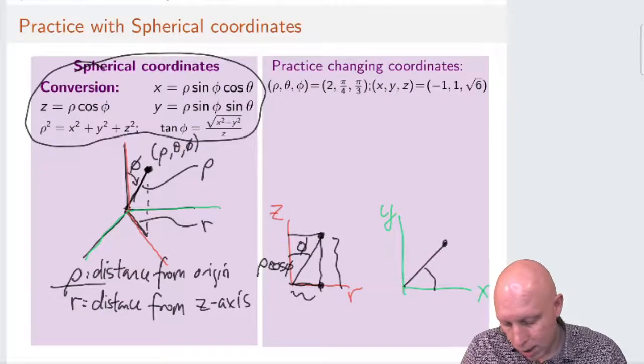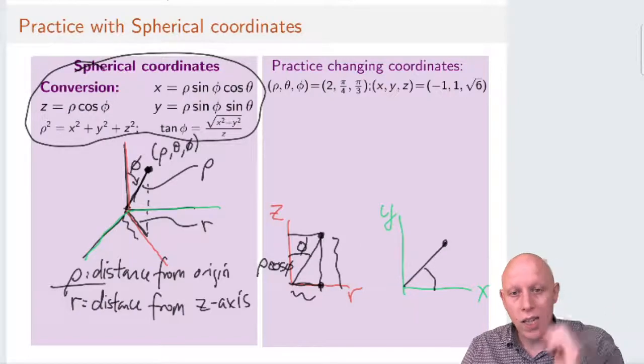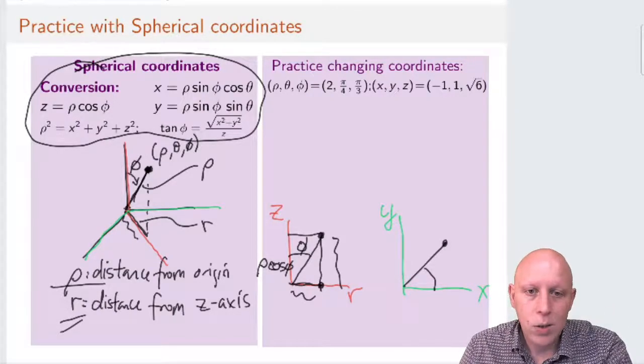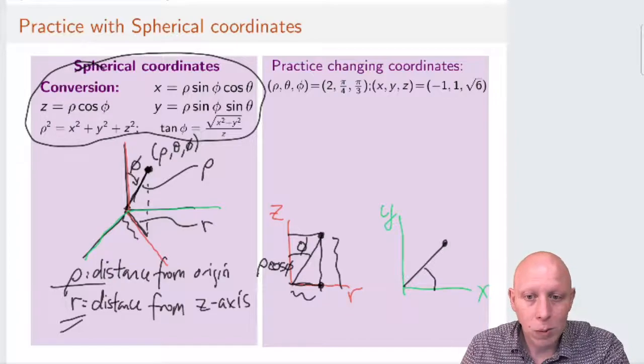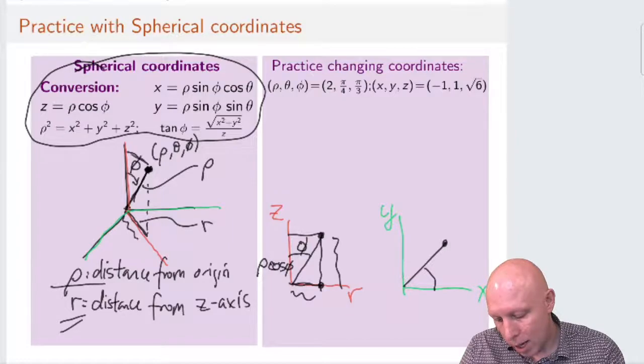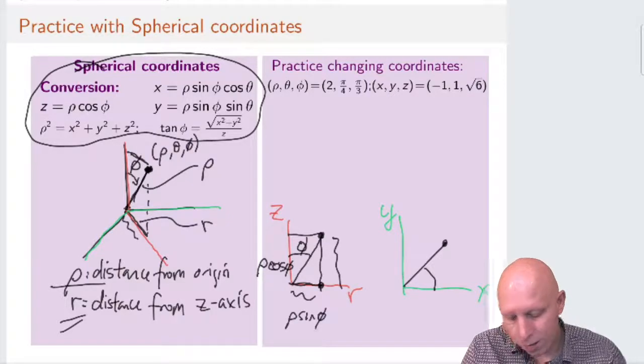But it also gets us this distance from the point to the z-axis. And we're used to thinking of that as r. So let's use that letter r to represent that. So this distance of the point from the z-axis you can represent as rho sine of phi.